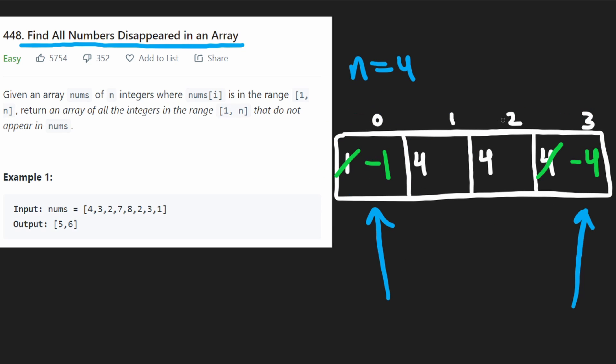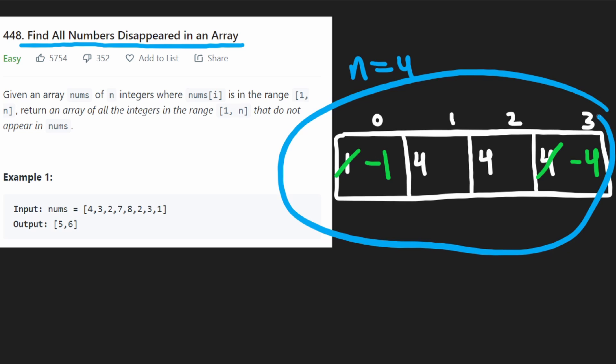But since the values at index one and two are positive, that means one plus one, which is two, and two plus one, which is three, do not exist in this array. So this is going to be our return value. And that's exactly what we wanted to return in this case. So I hope this kind of helps you understand why we don't need extra memory. With that being said, we can now jump into the code.